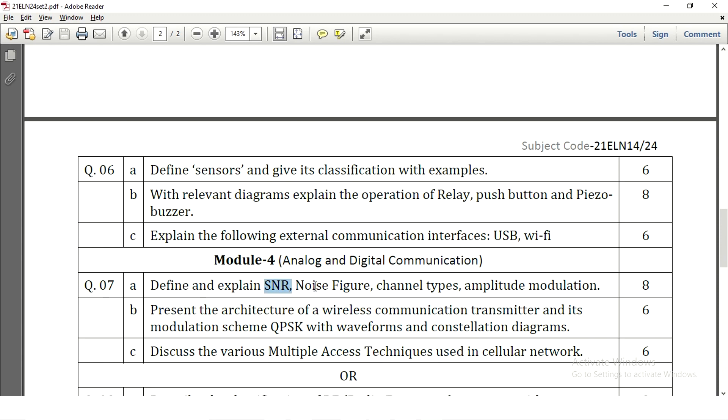Define and explain SNR signal to noise ratio and noise figure, channel types and amplitude modulation. Four concepts for 8 marks each carry 2 marks. Present the architecture of wireless communication transmitter and its modulation scheme that is QPSK with waveforms and constellation diagrams. So here we need to explain the modulation scheme of QPSK and also write the waveform and constellation diagrams also they have asked to write in the question itself. So it carries 6 marks. And then discuss various multiple access techniques used in the cellular network. This carries 6 marks.